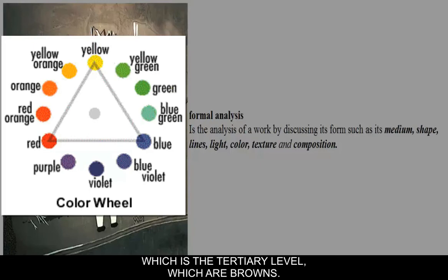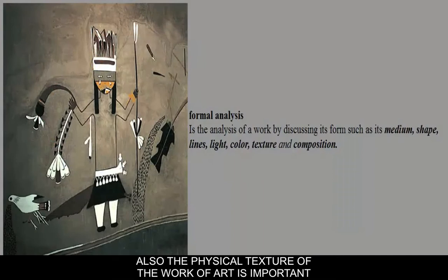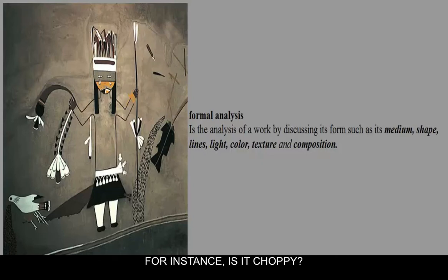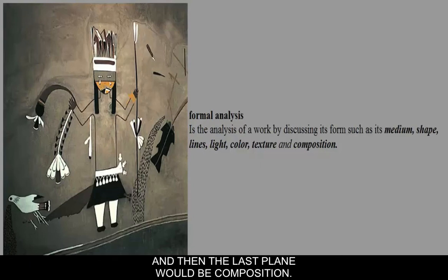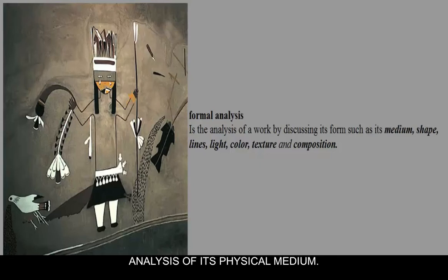The physical texture of the work of art is also important, and we can talk about visual texture — is it choppy or smooth in terms of how it looks? But also, is it rough or smooth in terms of how it feels? And then the last element would be composition. So, looking at this work of art, we'll start with an analysis of its physical medium.